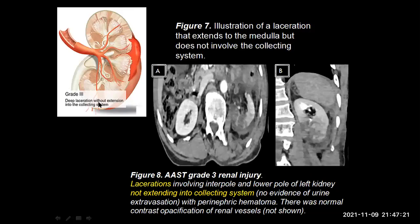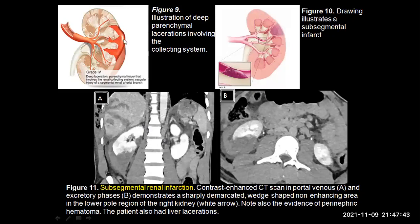Grade 3 injuries include deeper lacerations, that is more than 1 cm, which do not involve the collecting system. You can see that there are multiple lacerations in the inter and lower pole region of the left kidney and none of these extended into the collecting system; hence, this patient was graded to have a grade 3 AAST renal injury. Coming to grade 4 injuries, these include much deeper lacerations extending into the collecting system with active contrast extravasation. Any subsegmental infarct is also graded as a grade 4 injury. You can see that in this patient, in the right kidney lower pole region, there are wedge-shaped non-enhancing areas in keeping with a subsegmental renal infarct — this was a grade 4 injury.